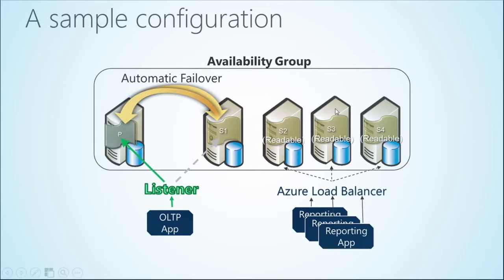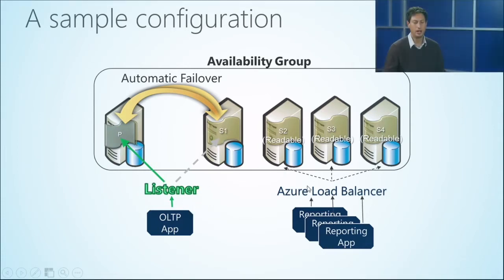You can use secondary replicas for more than just waiting for failover — use them to move read workloads or take backups. You can actually load-balance reads across the readable secondaries. If you have reporting applications requiring fast response times and a large number of users, you can add two replicas and load-balance reads between them. In your availability group, OLTP applications will find the primary through a listener — just a DNS name — while reporting applications can connect to the readable secondaries with load balancing between them.